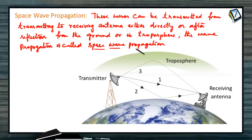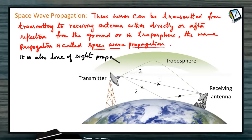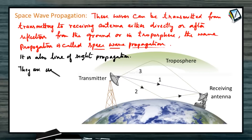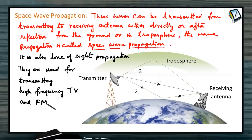Space wave propagation is also called line of sight propagation. The line of sight is the distance between the transmitting and the receiving antenna at which they can see each other. The space wave propagation can be utilized for transmitting high frequency TV and FM signals.